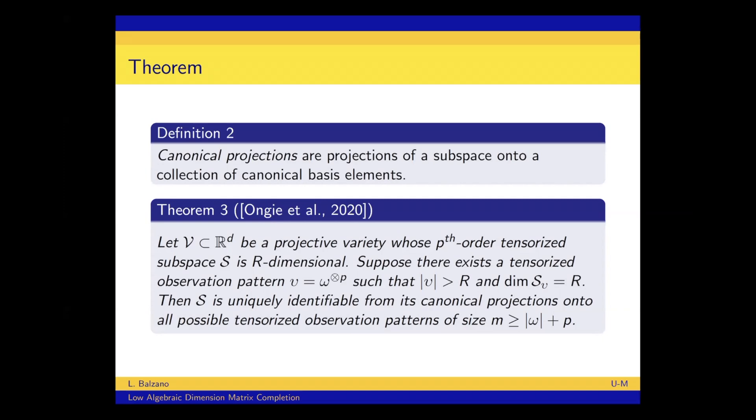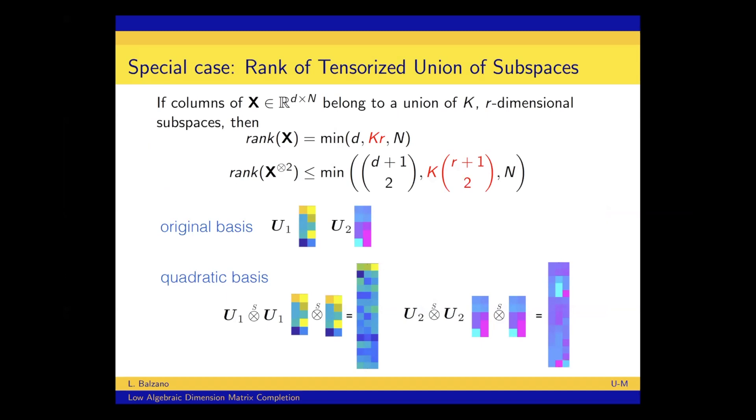And then suppose that there exists one of these sampling patterns, these tensorized sampling patterns, for which the subspace on those coordinates is full rank. It has also this rank capital R. So this is where I'm kind of getting around some of the need of the general position subspace. So I'm assuming that there's one observation pattern on which I get a full rank view into the subspace, and as long as there's one, then that subspace is uniquely identifiable from the canonical projections onto all possible observation patterns of that size. The same size as the one that gave us the full R dimensional subspace. So this sounds pretty technical. I can answer questions, but let's look instead at a specific case of this theorem, and it might give you a little bit more concrete thing to think about.